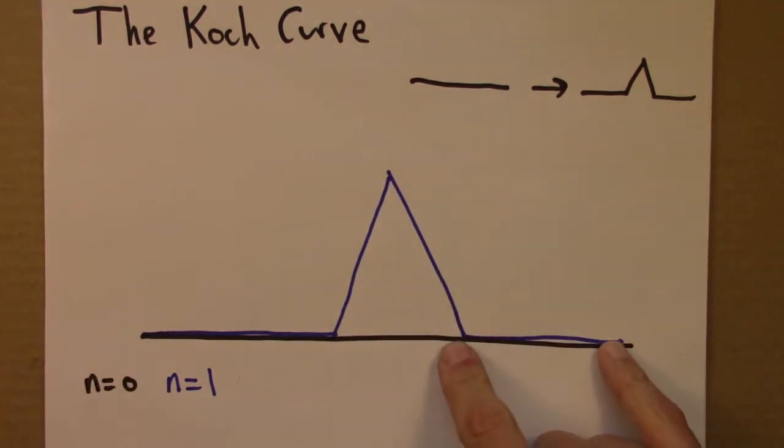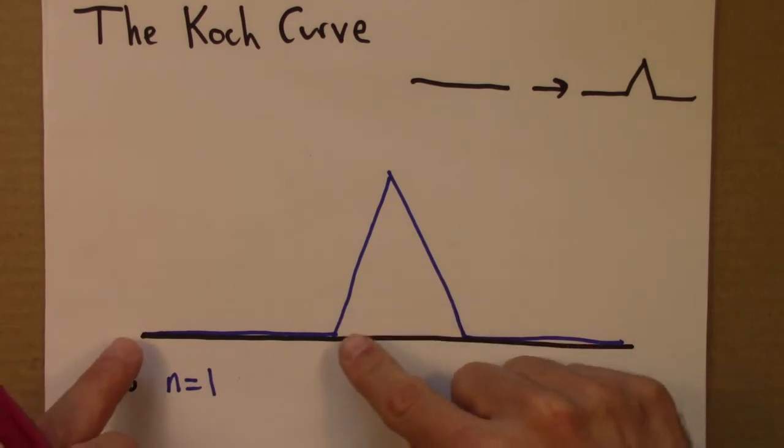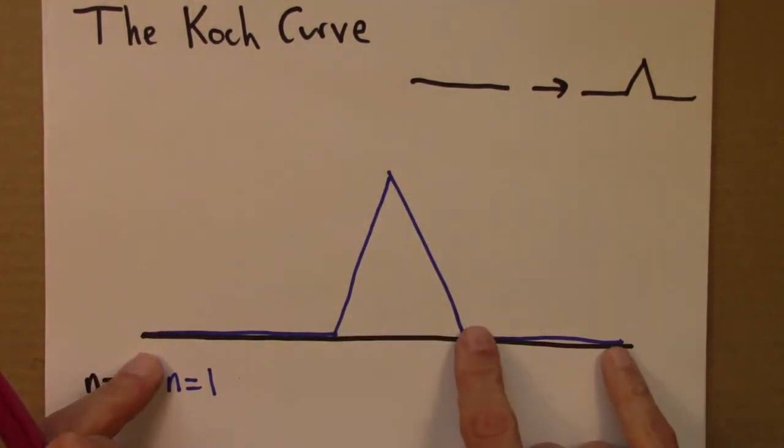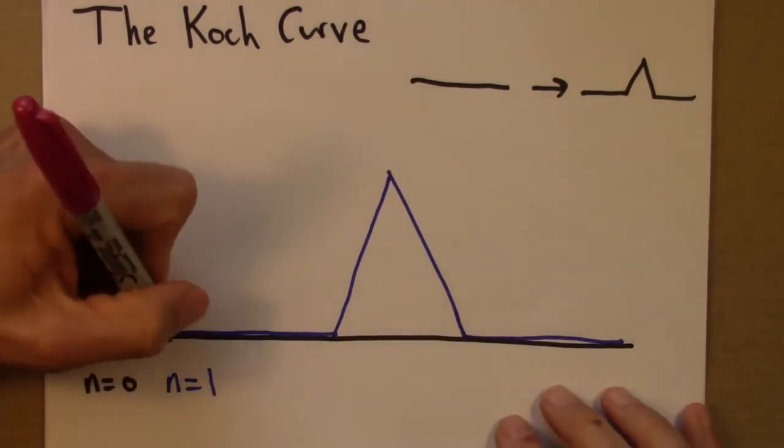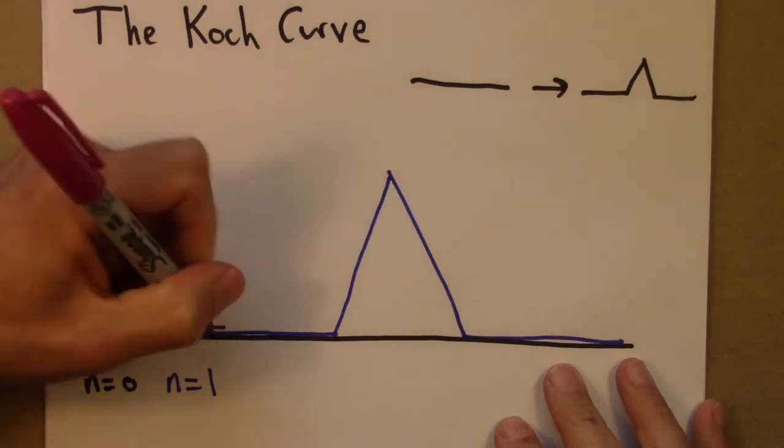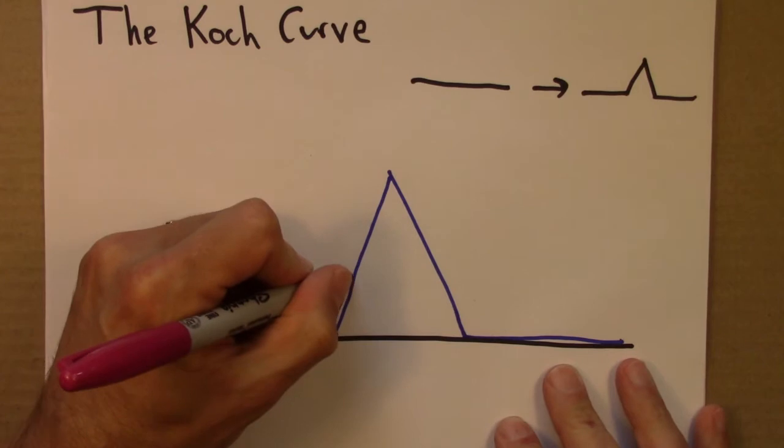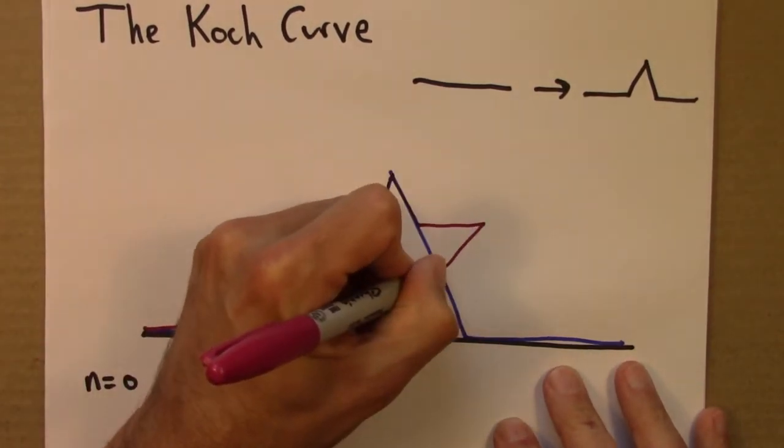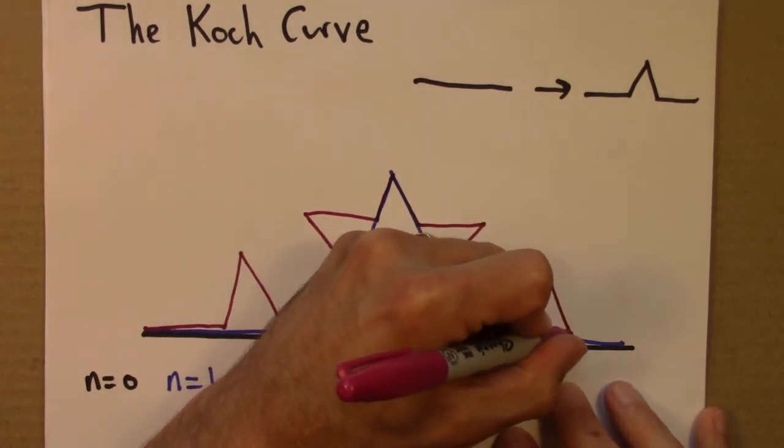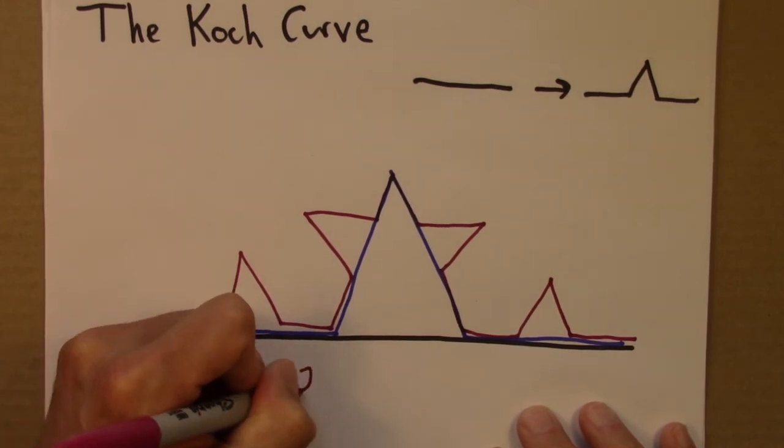Now I have one, two, three, four line segments. In the Koch curve, these should all be the same length. This is obviously not a perfect drawing. Step n equals two, I replace each blue segment by a bent segment. So that becomes n equals two.